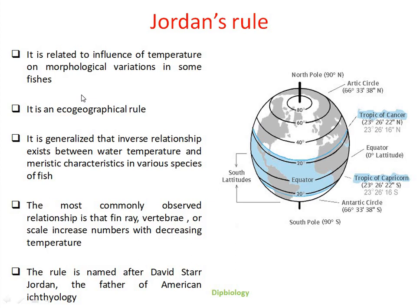vertebrae, or scales increase in number with decreasing temperature. That means the population of the same species remaining in the colder regions have an increased number of vertebrae, scales, or fins, while the population of the species in warmer regions have a lesser number of these meristic characters.